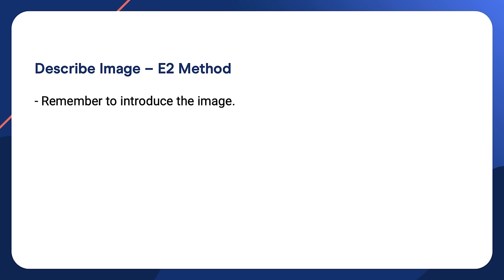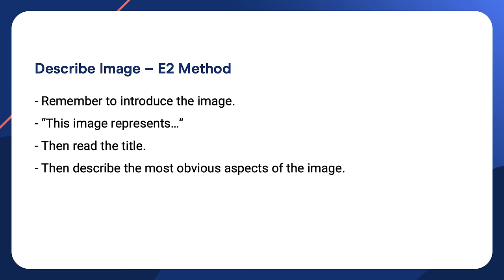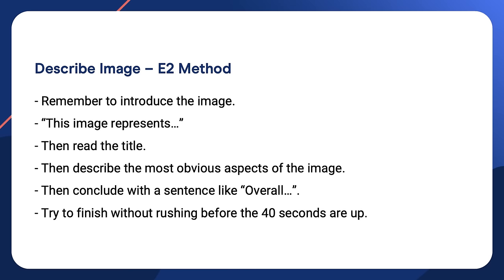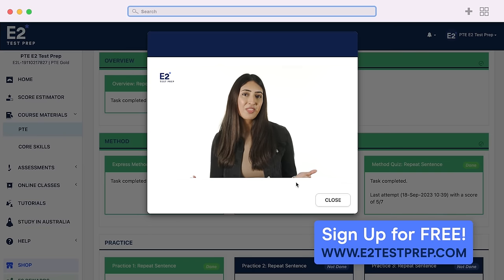All right, let's do describe image. Before we attempt the describe image questions, I have a question for you. Do you know our E2 method? If not, here is a quick explanation. Remember to introduce the image — 'This image represents' — and then read the title. Then describe the most obvious aspects of the image. And then conclude with a sentence like 'Overall.' Try to finish without rushing before the 40 seconds is up.